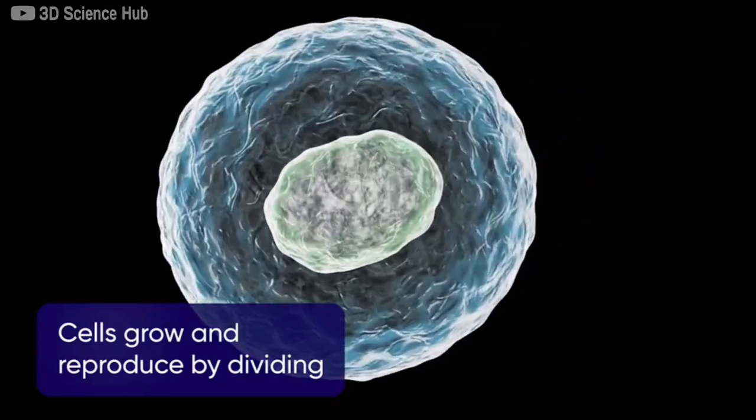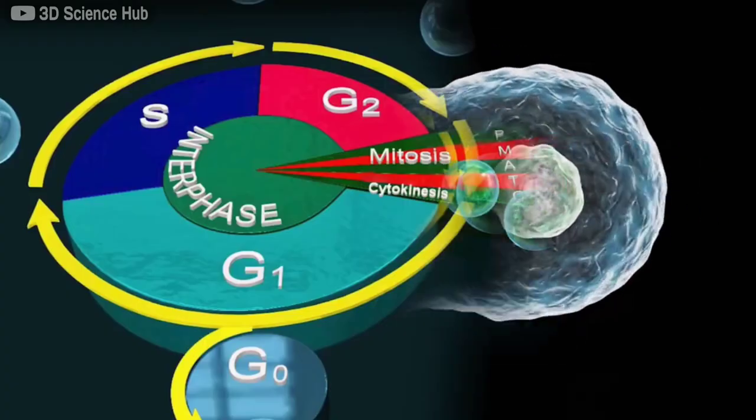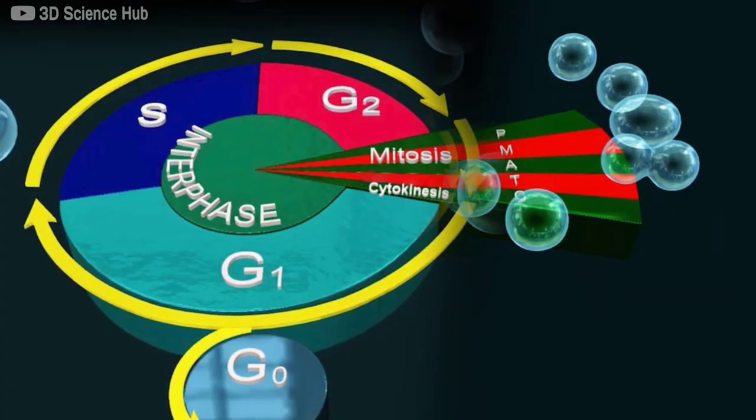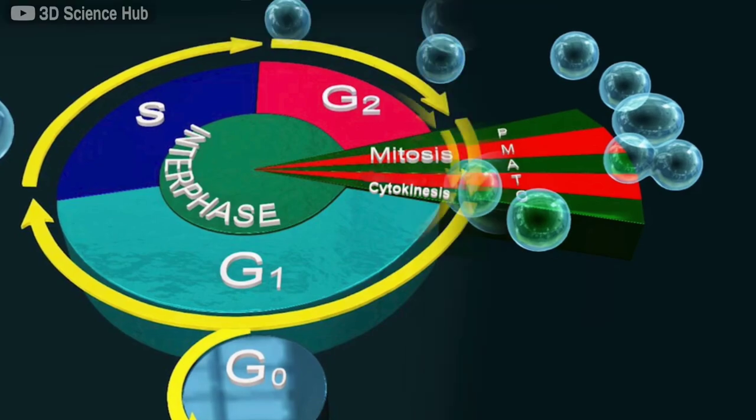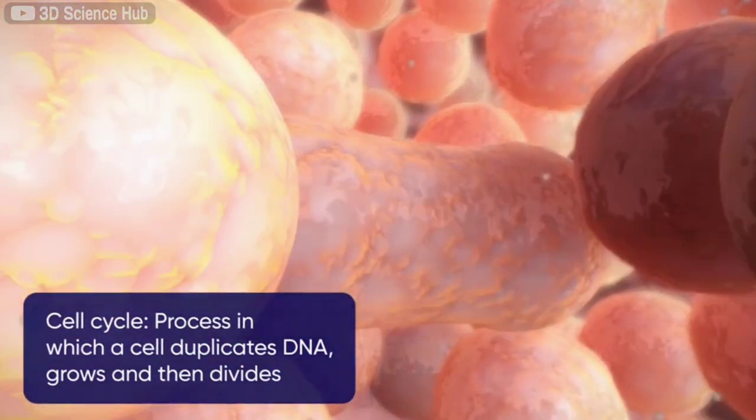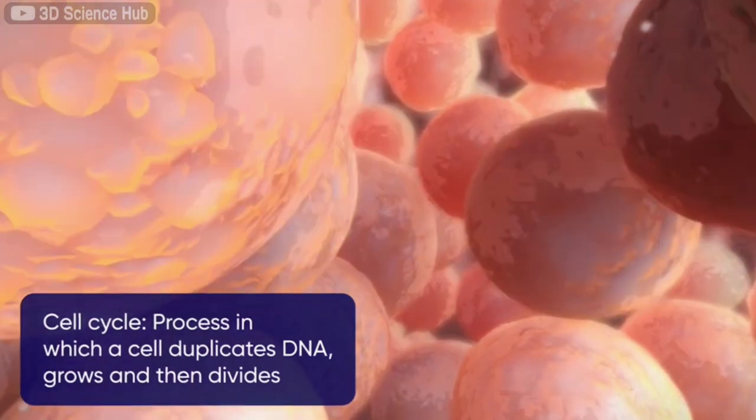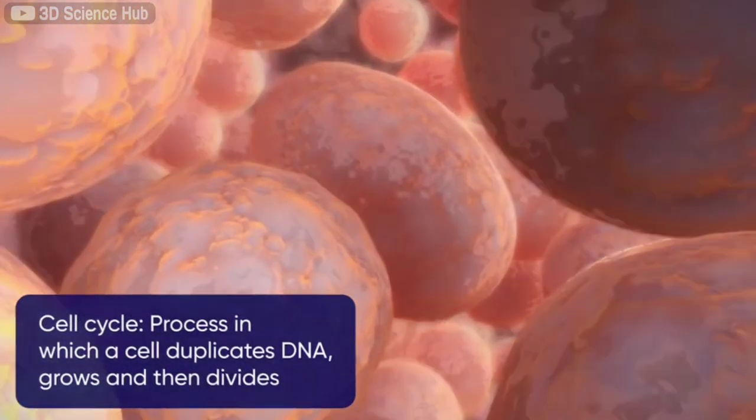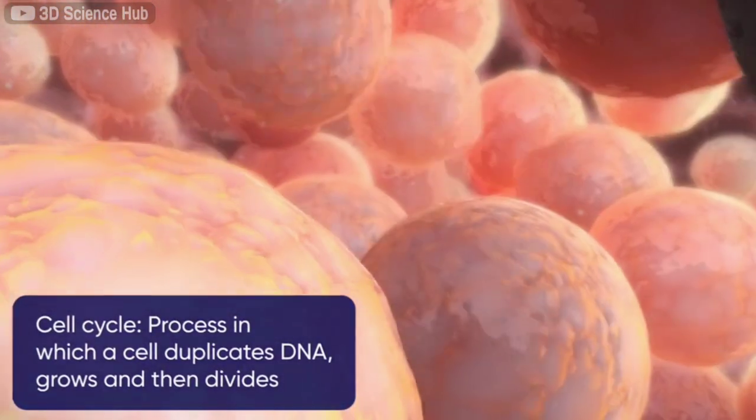Cells grow and reproduce by dividing. To do this, they undergo a process called the cell cycle. During the cell cycle, important processes like cell growth and DNA synthesis occur. This can be defined as the process in which a cell duplicates its DNA, produces more of its own constituents, and then divides into two new cells.